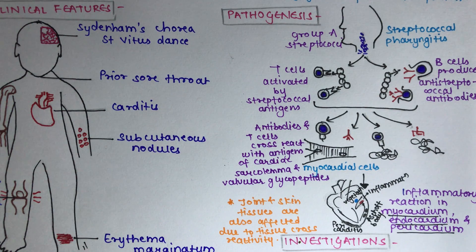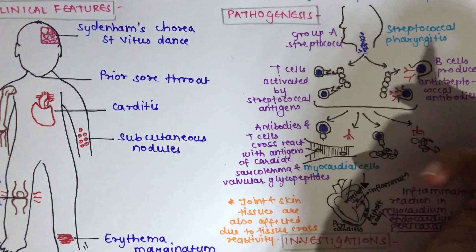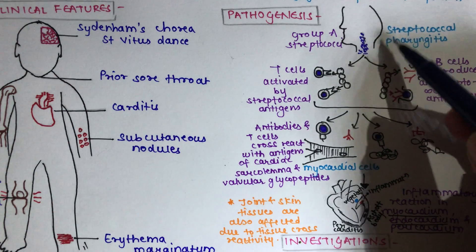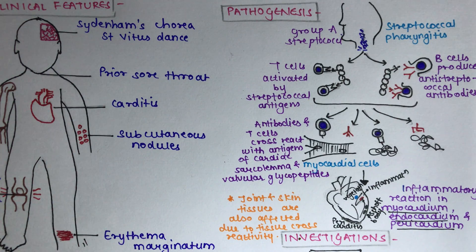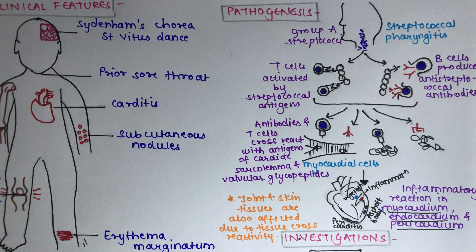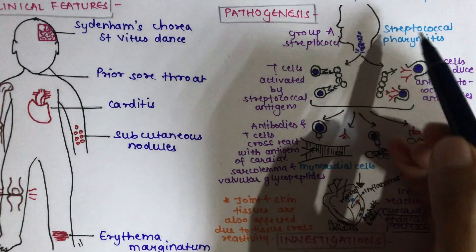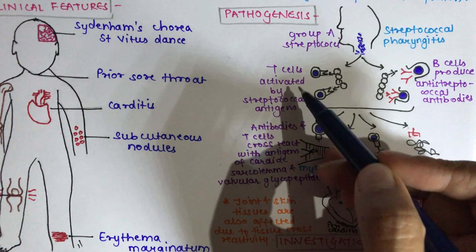Now moving to pathogenesis — how exactly this disease is caused. The individual develops pharyngeal infection with a serotype of Group A Streptococci. This bacteria acts as an antigen in the body. To fight this antigen, the body produces antibodies. This bacteria has cross-reactivity with cardiac tissue, and hence anti-streptococcal antibodies mediate an inflammatory reaction in the myocardium, endocardium, and pericardium — affecting all layers of the heart.